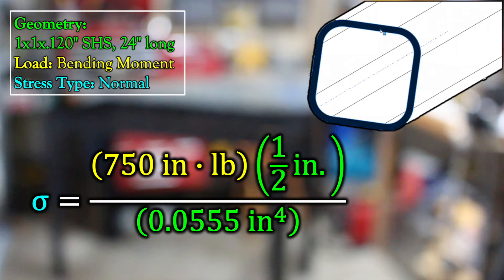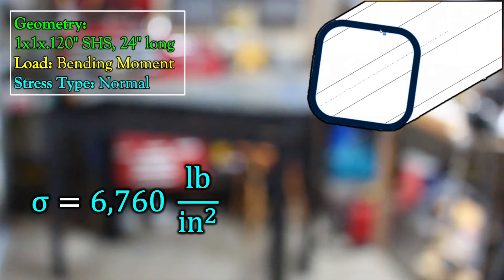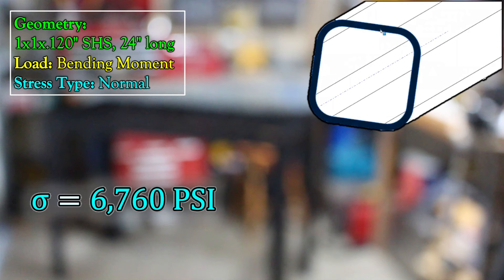So that's your stress broken down into its corresponding load and geometry. Crunching the numbers, we get 6760 pounds per square inch, or PSI. So this metric sums up the relationship between our geometry and our load.